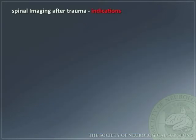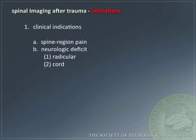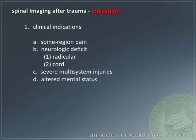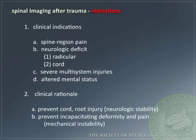The indications to image the spine after trauma are as follows. Clinical indications include: spine region pain, neurologic deficit (either radicular or cord), severe multi-system injuries, and altered mental status. The clinical rationale is to prevent cord and root injury and prevent incapacitating deformity and pain.